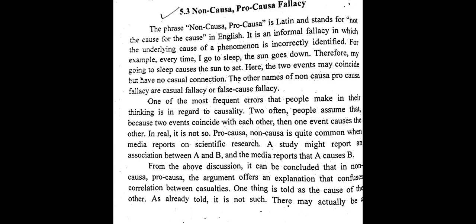The phrase non-causa pro-causa is Latin and stands for 'not the cause for the cause' in English. It is an informal fallacy in which the underlying cause of a phenomenon is incorrectly identified. For example: every time I go to sleep the sun goes down, therefore my going to sleep causes the sun to set. Here the two events may coincide but have no causal connection.